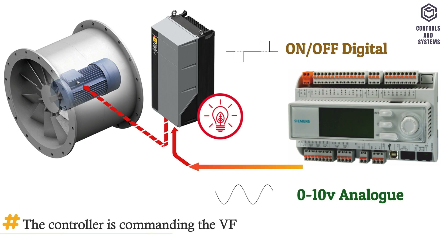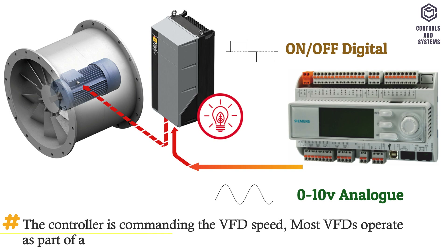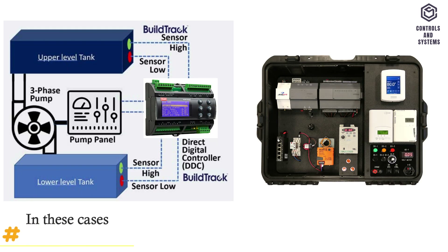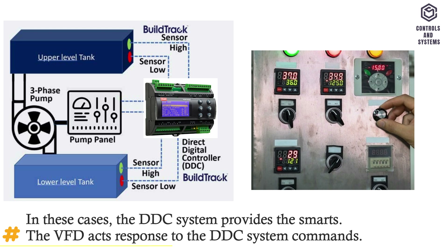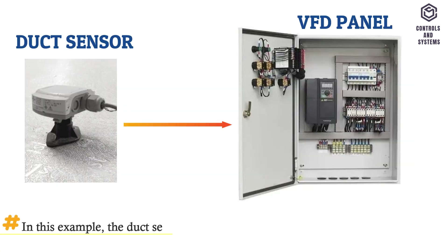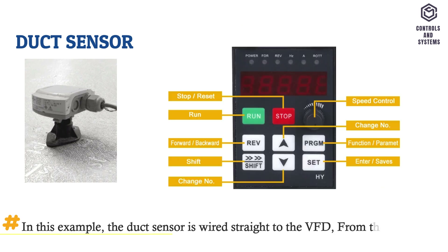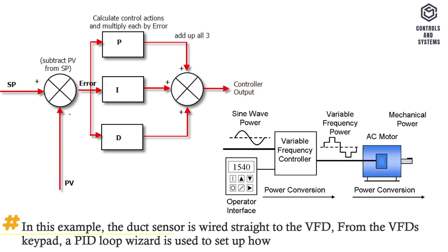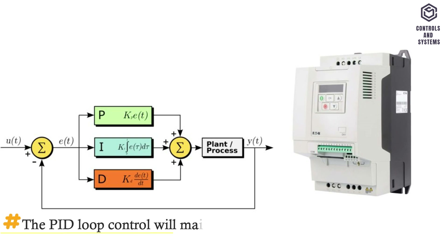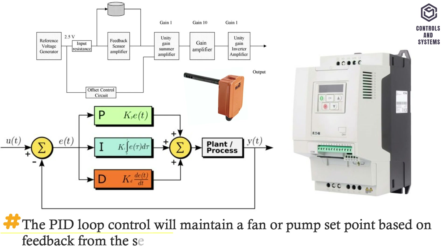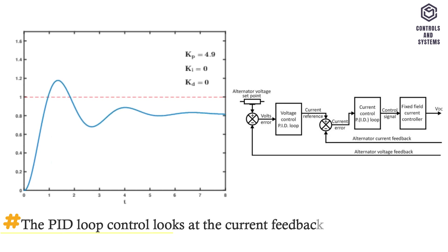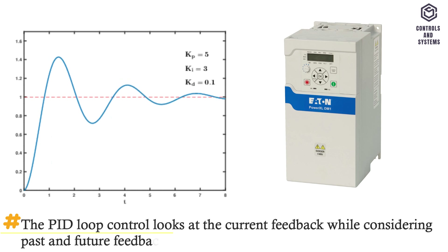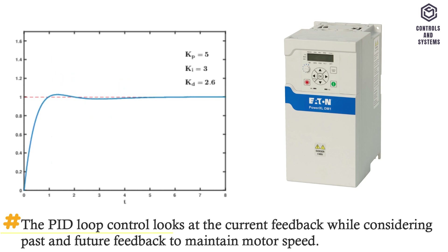The controller commands the VFD speed. Most VFDs operate as part of a DDC system; in these cases, the DDC system provides the intelligence and the VFD responds to its commands. Alternatively, the duct sensor can be wired straight to the VFD, and from the VFD's keypad a PID loop wizard is used to set up how the VFD controls the fan speed. The PID loop control maintains a fan or pump set point based on feedback from the sensor, looking at current feedback while considering past and future feedback to maintain motor speed.